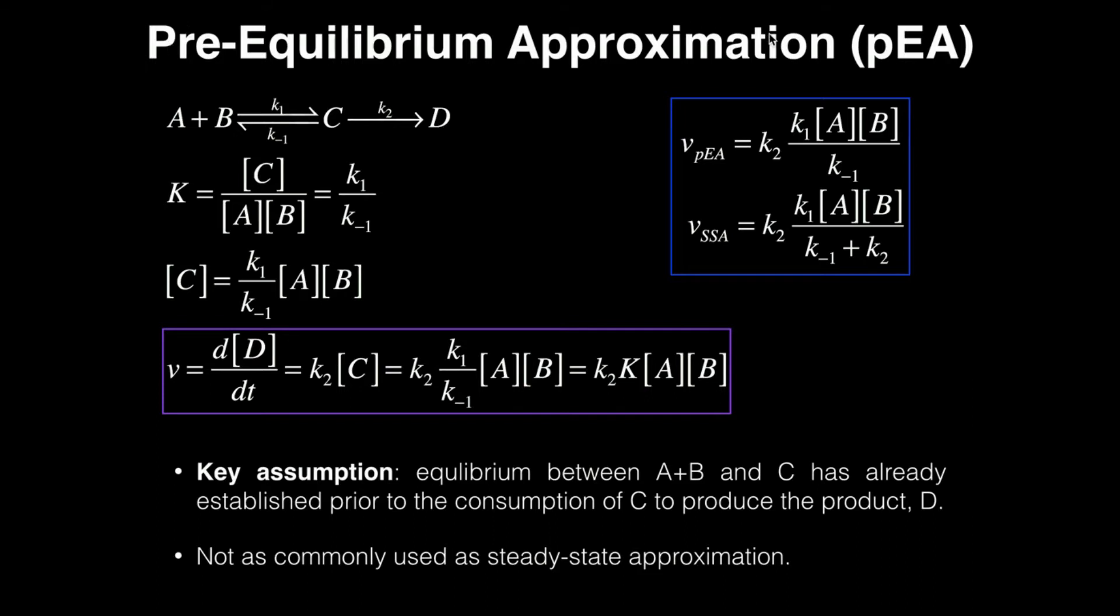We're going to be using the same one and we're going to use this assumption, this set of mechanisms, to be able to derive a similar expression to what we saw before. What the pre-equilibrium approximation assumes is that A and B form an equilibrium with C before any C is actually converted to D.